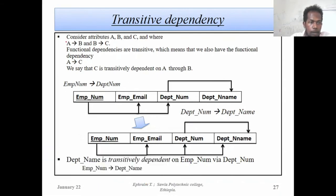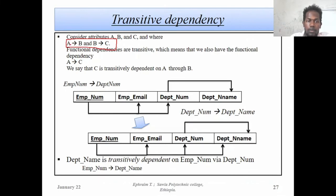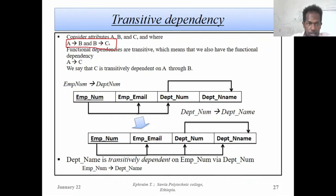Here we have Attribute A. Attribute A determines Attribute B, while Attribute B determines Attribute C. The determinants are Attribute A and Attribute B — Attribute A determines Attribute B and Attribute B determines Attribute C. This is simply a Functional Dependency chain.